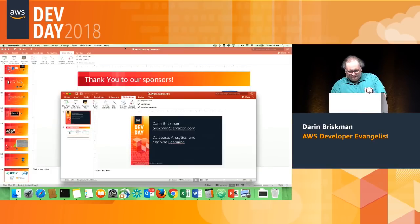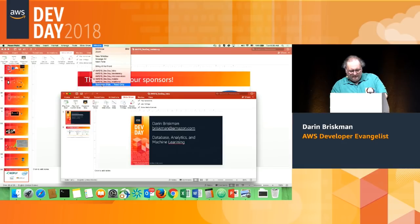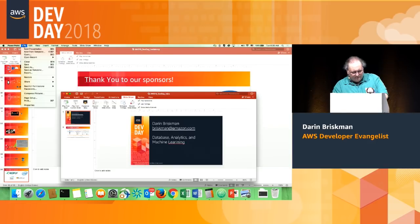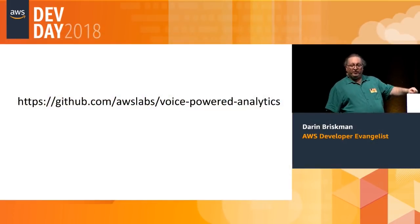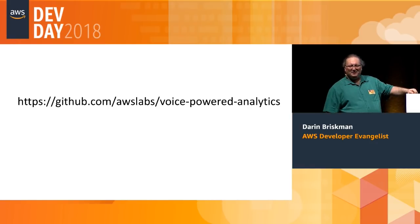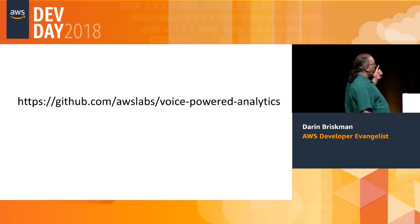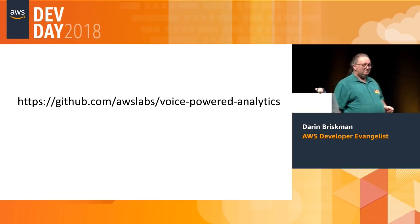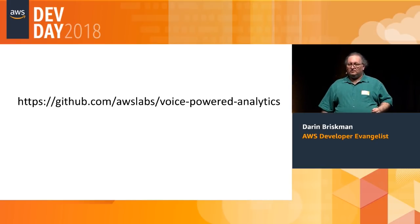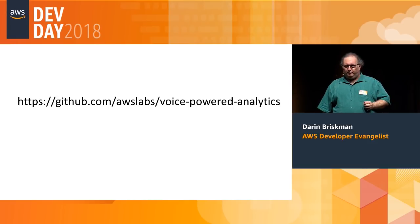So let's talk about the lab. Did everyone get a student account? Does anyone need a student account? Okay, good. So please open up this GitHub, which is where the lab is located. The Wi-Fi password is 'wearebuilders' with an exclamation point.